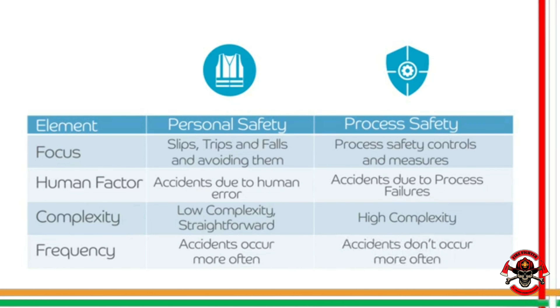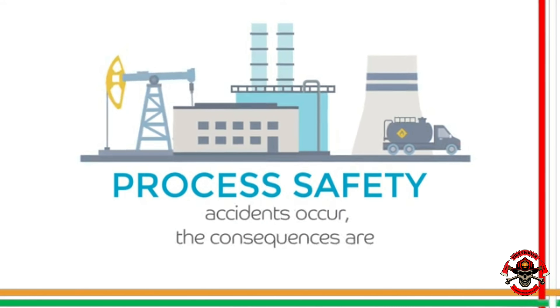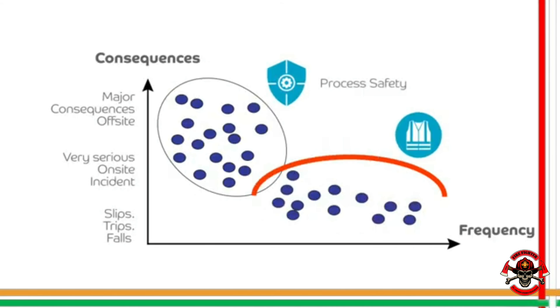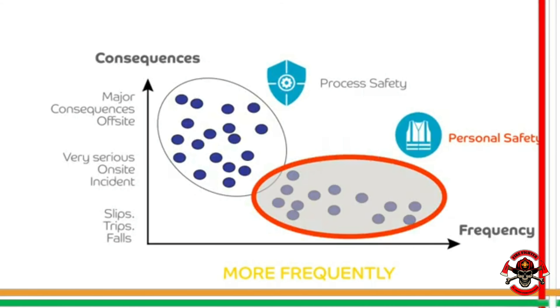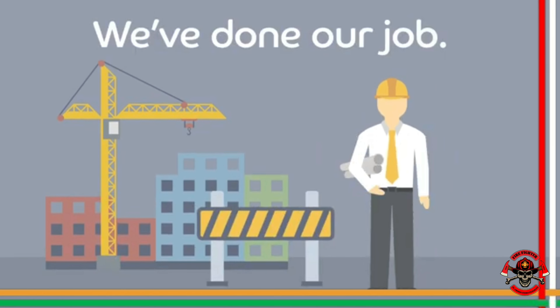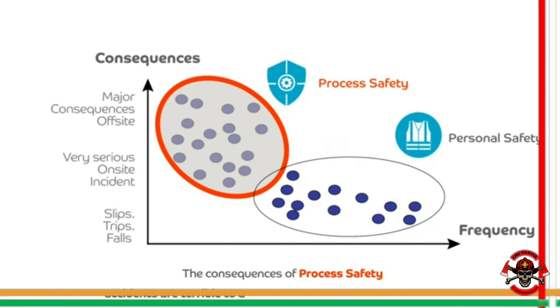Personal safety accidents occur more frequently, while process safety accidents don't occur often. However, if process safety accidents do occur, the consequences are tragic. If we map accidents, we can see that personal safety accidents occur more often, and because of that we focus more on personal safety — but this gives us a false sense of security. As you can see from the graph, the consequences of process safety accidents are terrible to assets, the environment, and human life.